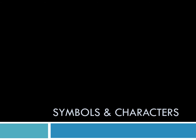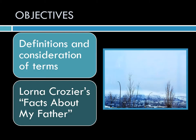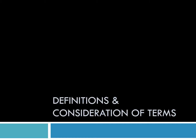This is going to be quite a brief presentation and it's on symbols and characters. The objectives are definitions and consideration of terms, and I want to talk about Lorna Crozier's 'Facts About My Father,' which we will be able to look at in terms of characterization while we're also talking about her poem.